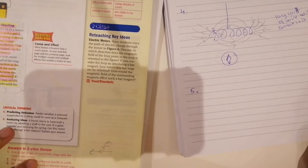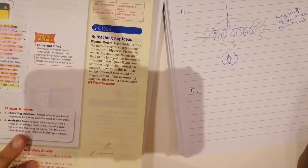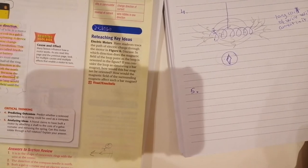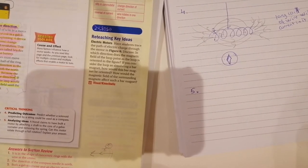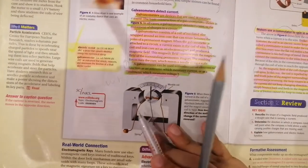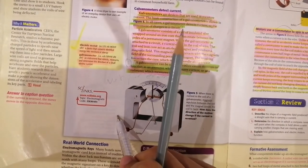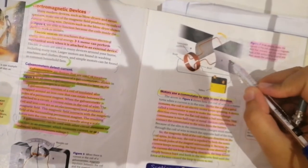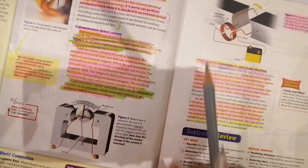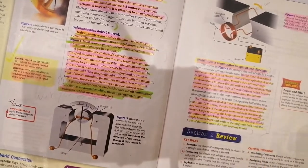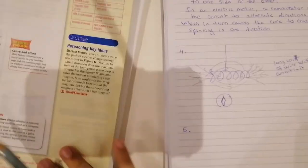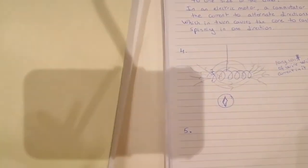Number five: a friend claims to have built a motor by attaching a shaft to the core of a galvanometer and removing the spring. Can this motor rotate through a full rotation? We need to understand that a galvanometer is very similar to an electric motor, but the motor has something extra — a commutator. Since the modified galvanometer has no commutator, the answer is no.